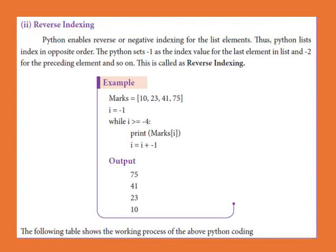The second method is reverse indexing. Python enables reverse or negative indexing for the list. The last element uses index minus 1, and the preceding element uses minus 2, minus 3, and so on. This is called reverse indexing. Python accesses the list in the opposite order using negative index values.